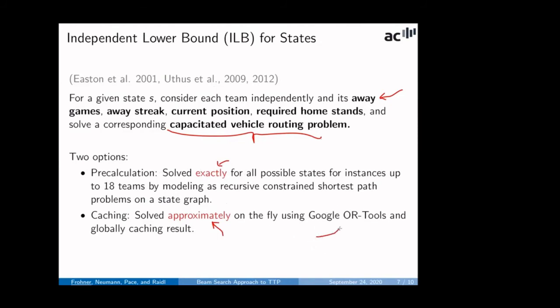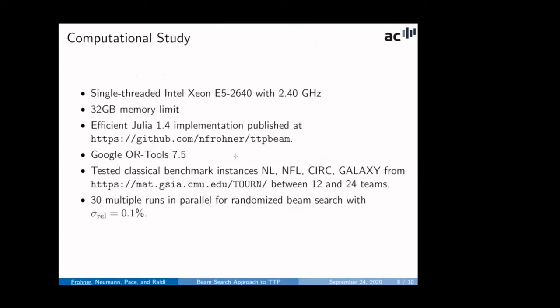And we have two options here to solve this, either exactly or approximately. We compare this later in the study. So, approximately, we do on the fly using Google OR-Tools and cache the result because there is much reuse going on. And exactly for this, we make use of a recursive constraint shortest path problem on another state graph. And then cache this in some lookup table. The study is performed in single-thread mode on the given processor with generous memory. And we have implemented our approach in an efficient Julia 1.4 implementation, also published it on GitHub. We make use of Google OR-Tools 7.5. And we test on the classical benchmark sets NL, circ and Galaxy, starting from 12 up to 24 teams.